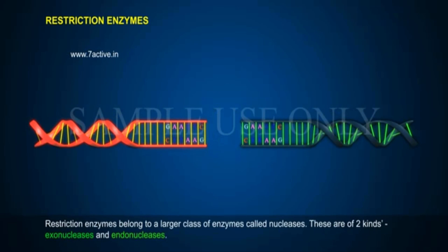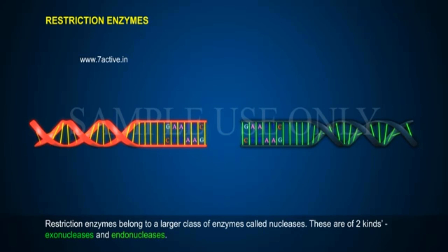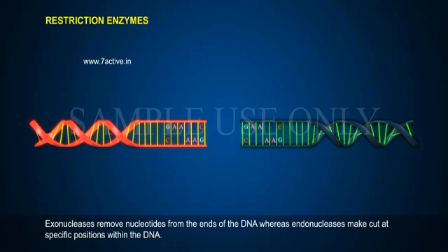Restriction Enzymes belong to a larger class of enzymes called Nucleases. These are of two kinds: Exonucleases and Endonucleases. Exonucleases remove nucleotides from the ends of the DNA, whereas Endonucleases may cut at specific positions within the DNA.